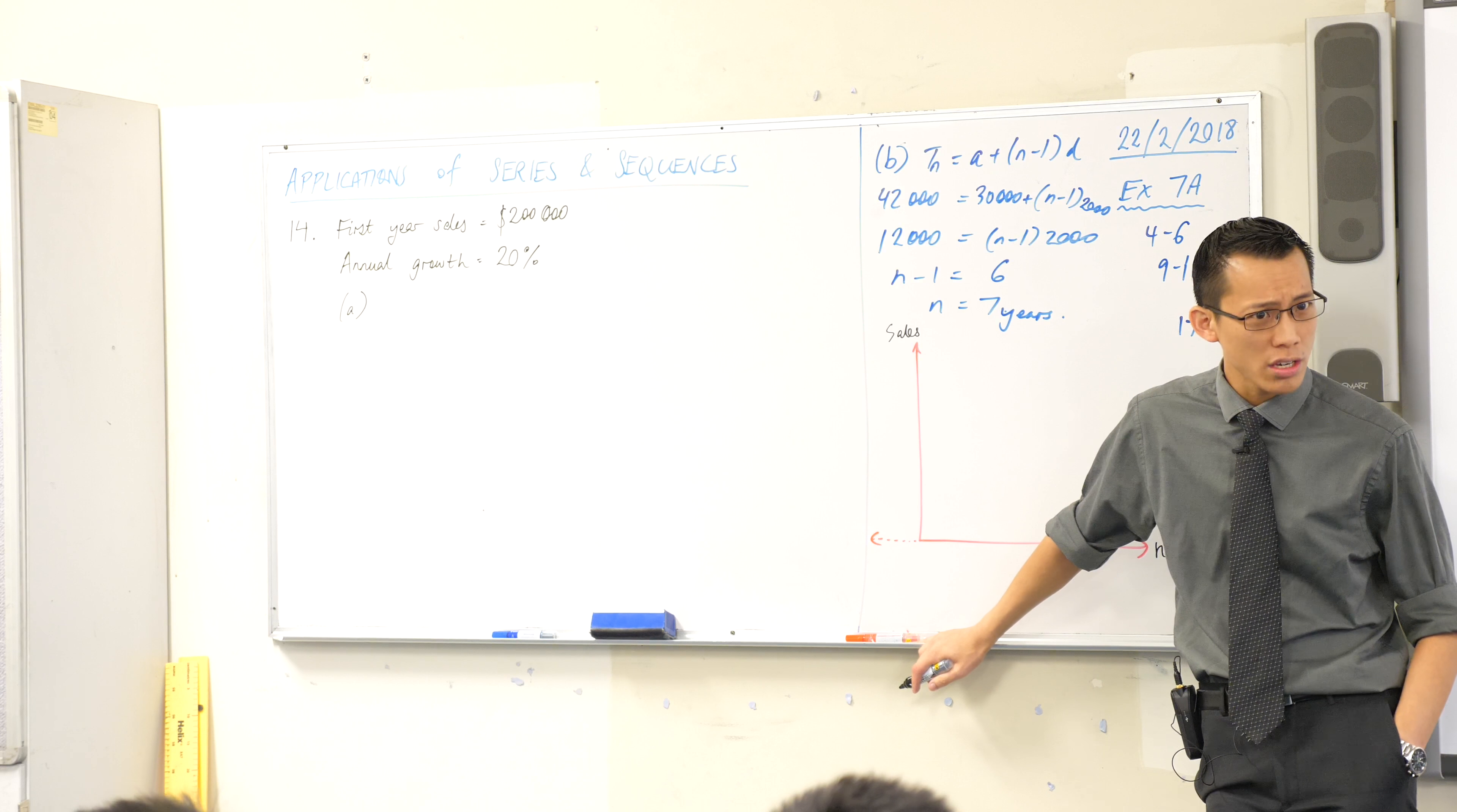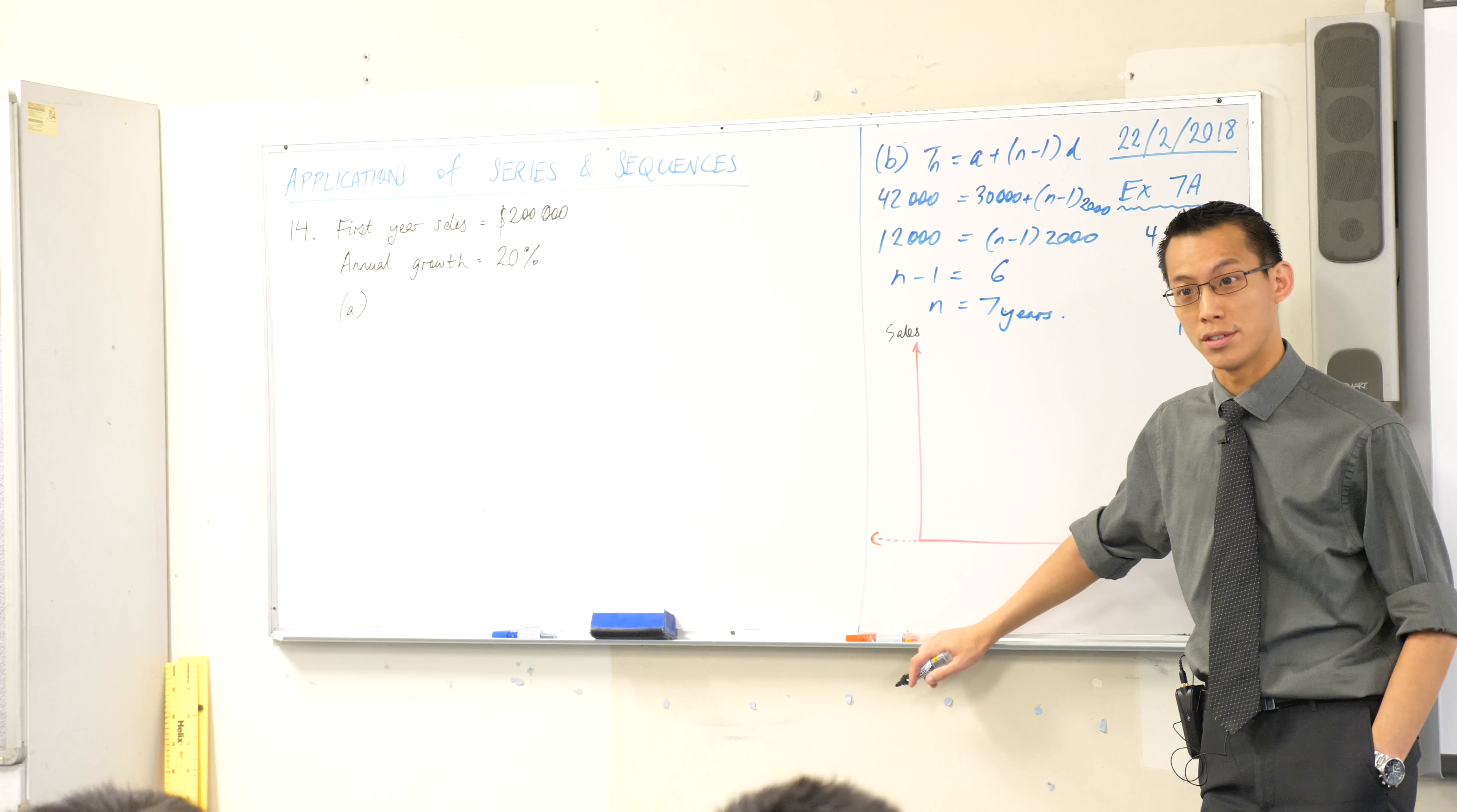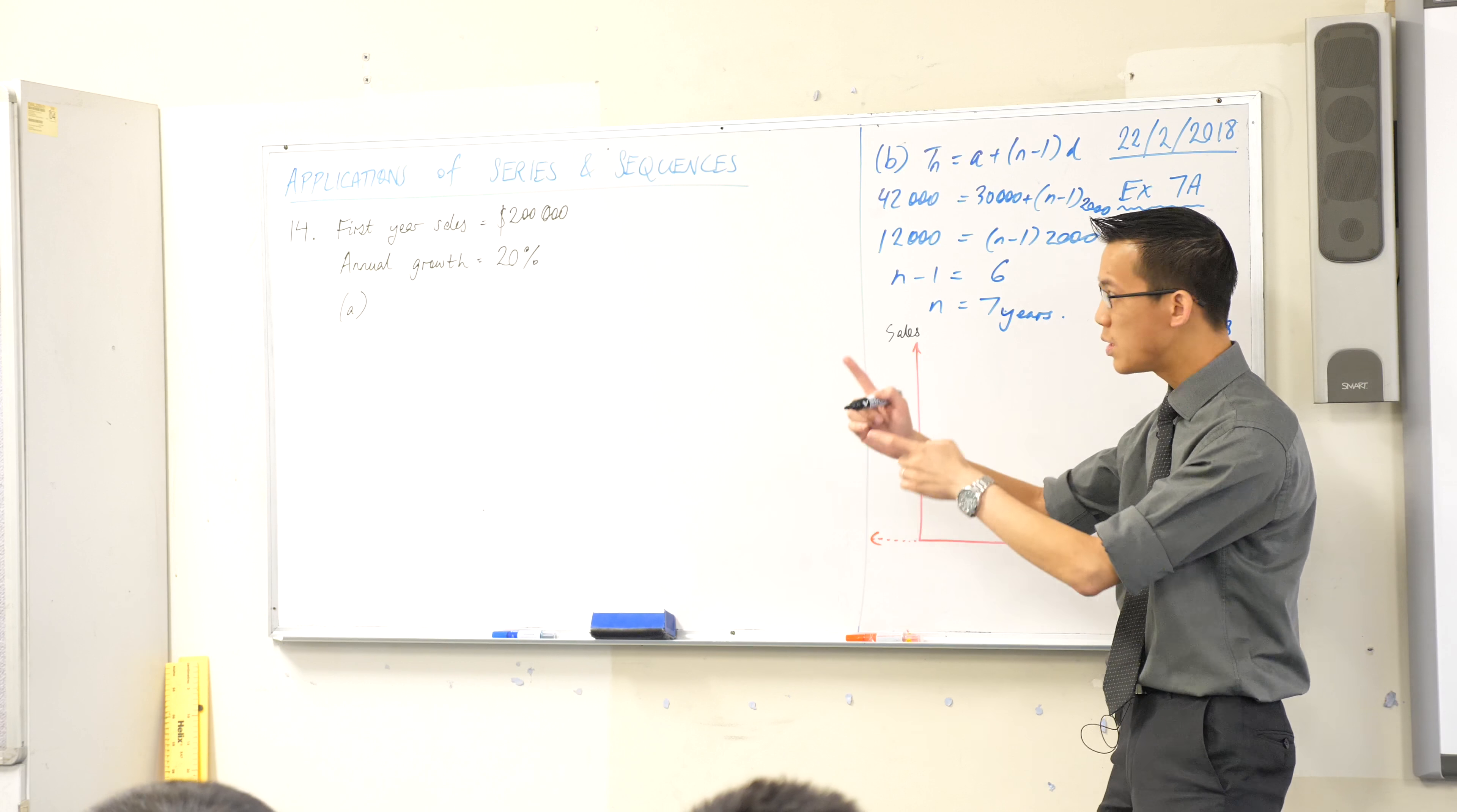I think they say in which year do the annual sales first exceed a million dollars. So just like we saw before, some questions require the nth term, other ones require the sum of the first n terms, so which one is this going to be? Is it going to be S of N or T of N?